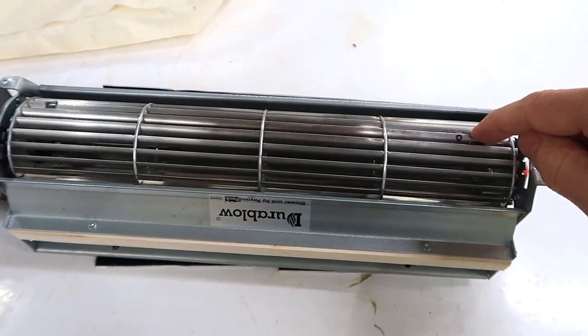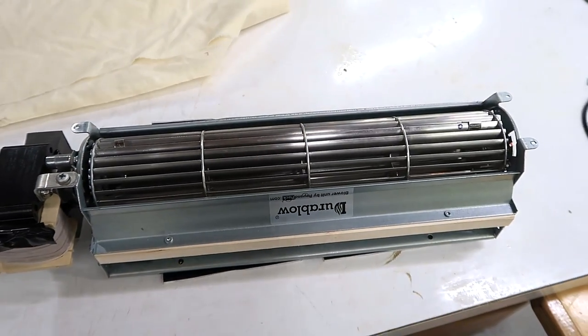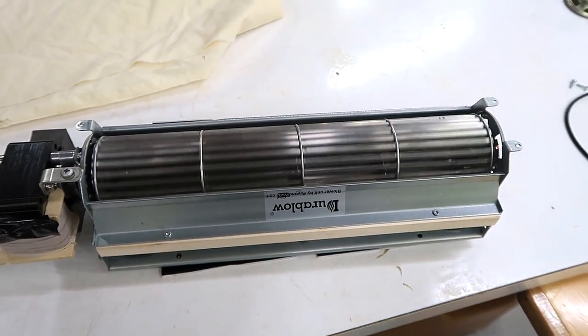The only way to measure and correct that is with dynamic balancing. This blower has already been balanced to some extent with these little weights here and here, but it's not perfectly in balance so I want to see if I can do better on this.